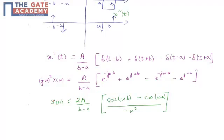Hence what we have is x of omega equal to twice A divided by b minus a times cos of omega b minus cos of omega a divided by minus omega square. This is from this part.